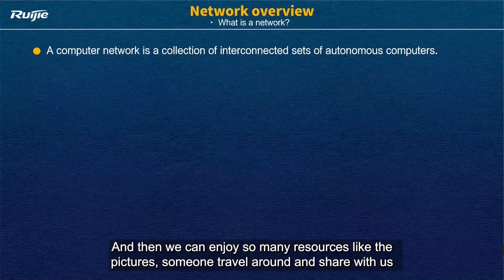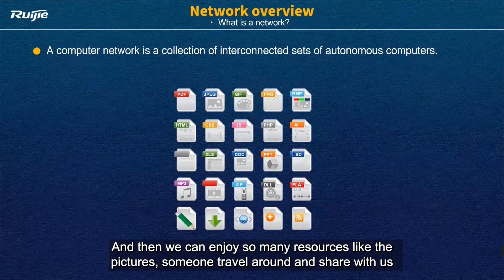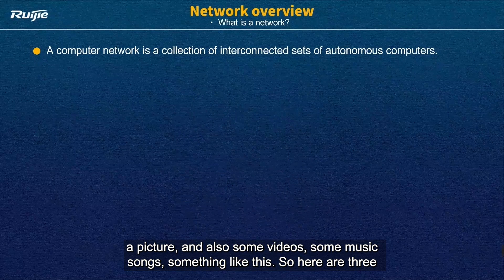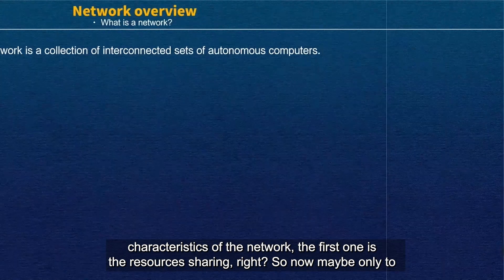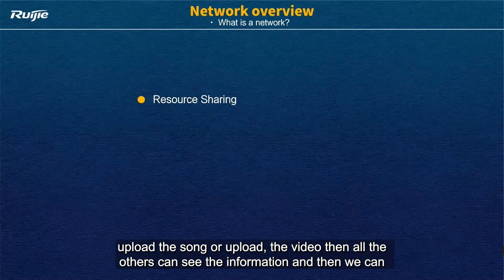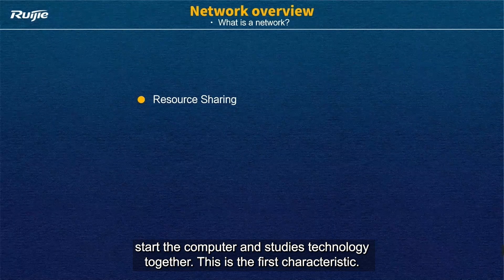And then we can enjoy so many resources like pictures — someone travels around and shares pictures with us — and also videos and music songs. So here are three characteristics of the network. The first one is resource sharing. Now maybe only one person uploads a song or a video, and then all others can see the information, and we can learn technology together.